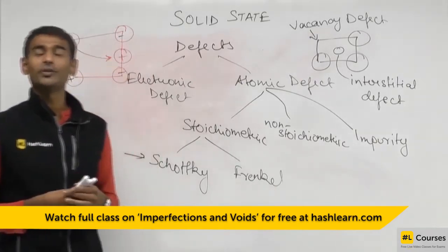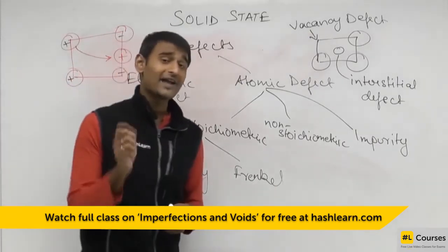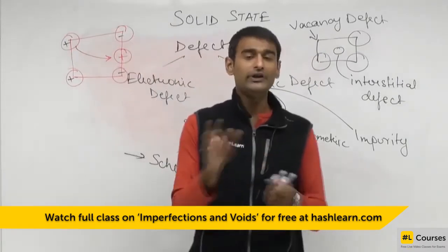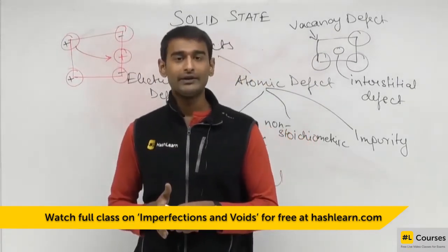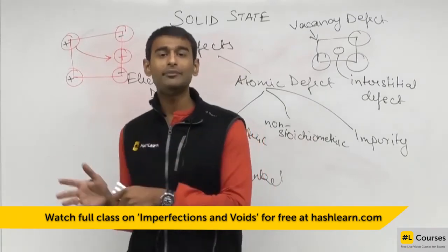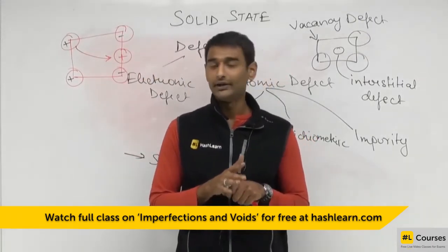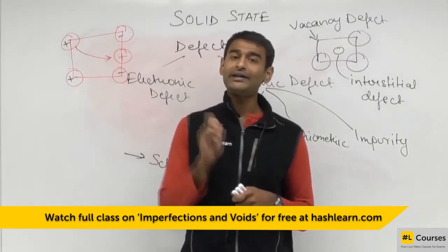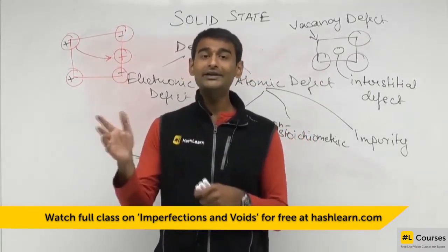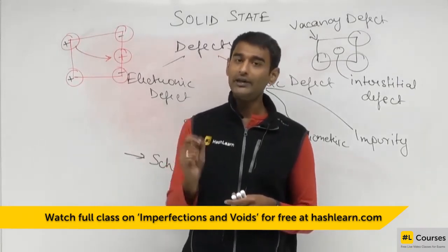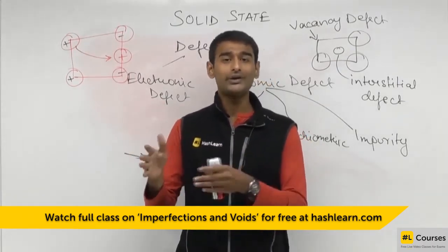So, these are two types of stoichiometric defects. If cations and anions are equally missing, it means their radii are comparable, and there is equal probability of both missing. When the cations and anions are of comparable radius, it leads to a Schottky defect — equal numbers of cations and anions are missing, which also leads to a lower density.